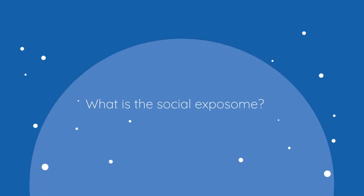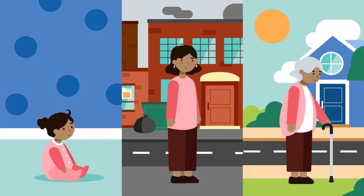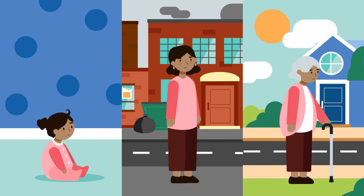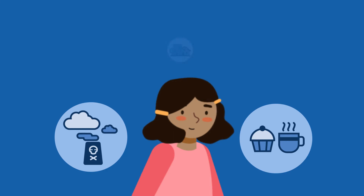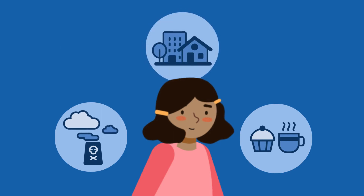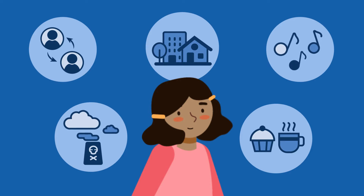The exposome is a term used to describe the sum of all the exposures a person experiences in their life, and consider how those exposures affect our health. By exposures, we mean things like the air we breathe, the foods we eat, the environment we live in, interactions with family and peers, even the sounds we hear.